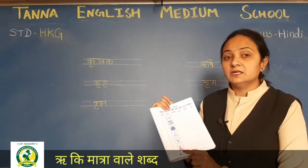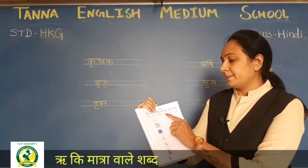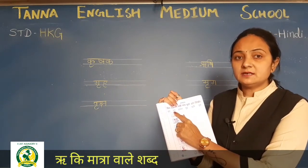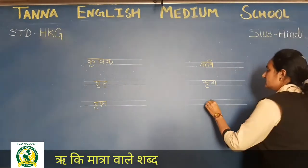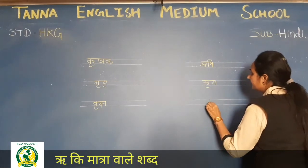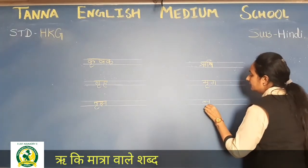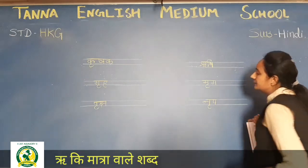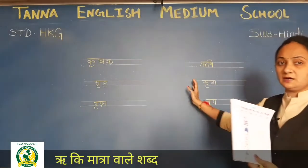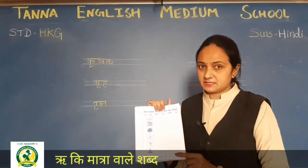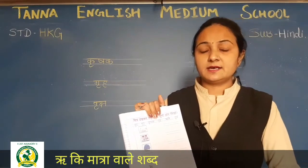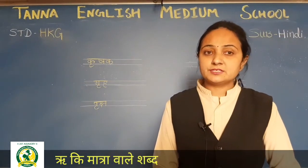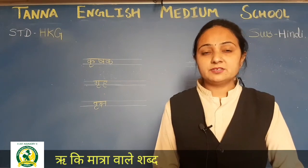Okay, so what do we say? Ri, pa, ri, pa. So here we will write first ri ki matra, pa, ri, pa. This way you have to complete it, and you have to complete it in your NHW book. Okay students, please complete it. Thank you.